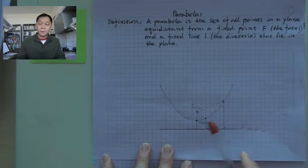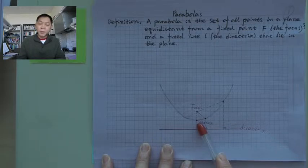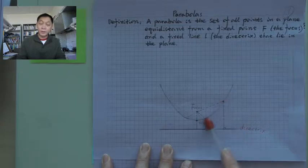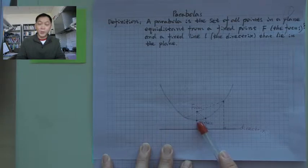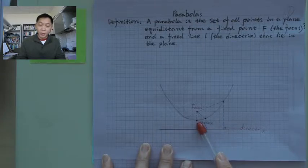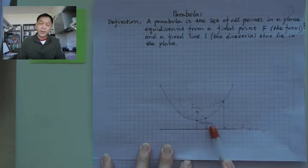And then, the middle point between focus and directrix, of course, is on the parabola, because this point is equidistant from focus and directrix. And this point on the parabola is special; we call it the vertex.